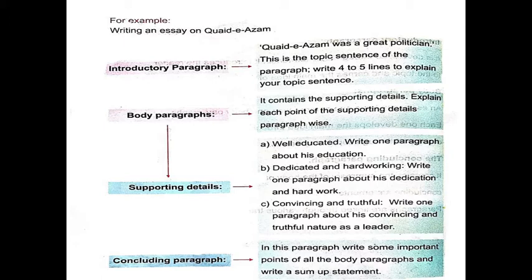For example, writing an essay on Quaid-e-Azam. First we'll have to write the introductory paragraph. Quaid-e-Azam was a great politician — this is the topic sentence of the paragraph. Write 4 to 5 lines to explain your topic sentence.